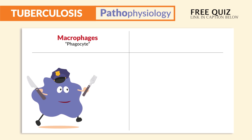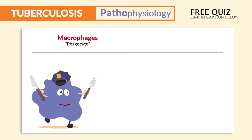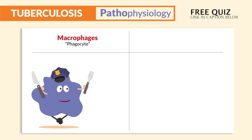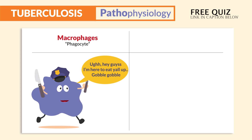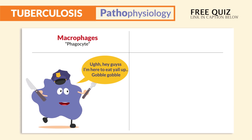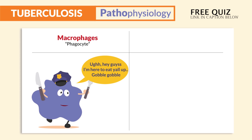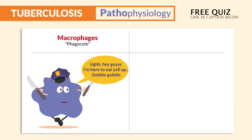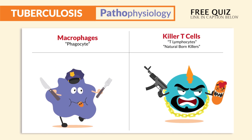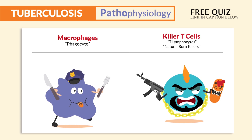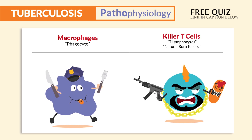So the macrophages typically gobble up the bad guys, kind of like a chubby cop — they love eating up every bad thing. They say, 'Hey guys, I'm just here to gobble up stuff — yeah, give them to me!'